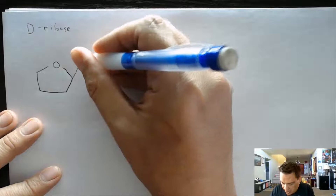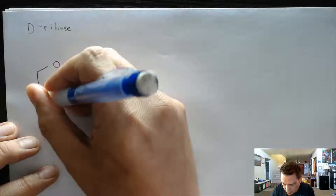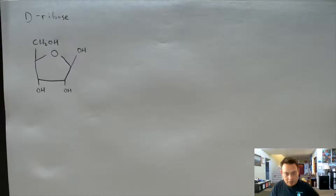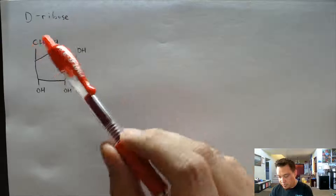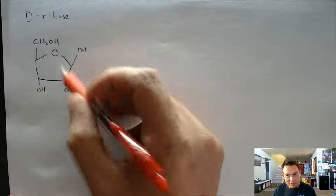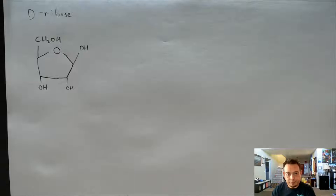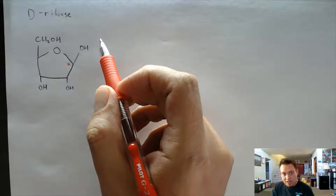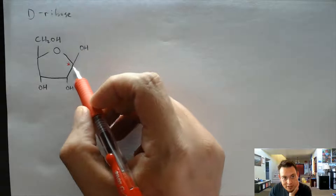So here we have the ring structure with OH groups — OH here, OH, OH, and CH₂OH. Based on the last chapter, you guys should be able to draw this as a straight chain and also recognize whether this is the alpha or beta anomer. Anyone going to answer — is this the alpha or beta anomer of ribose? Yes, this is the beta anomer. The way we identify it: we look at the anomeric carbon — it's the one with two single bonds to oxygen — and here it's the beta anomer.